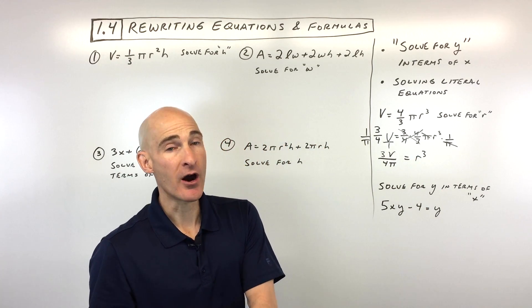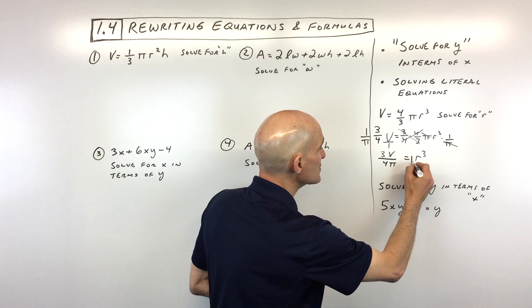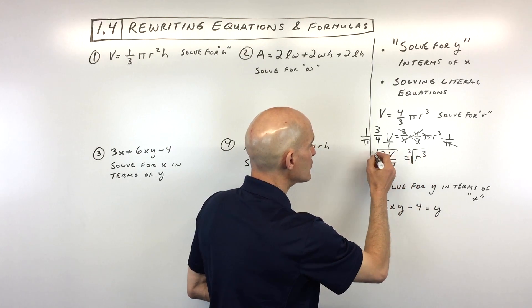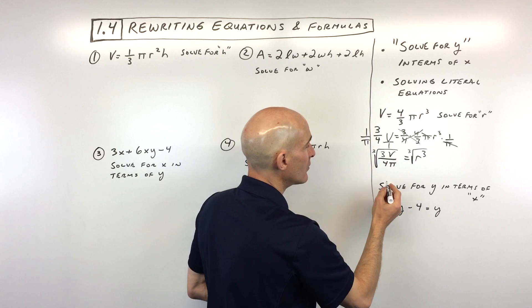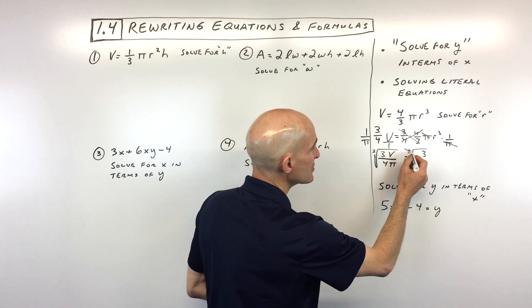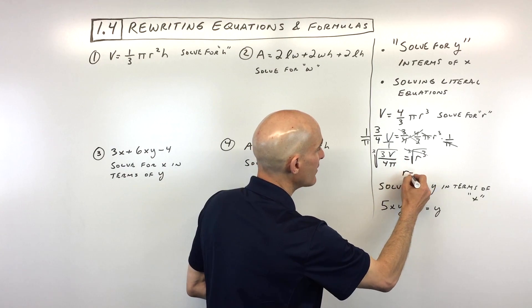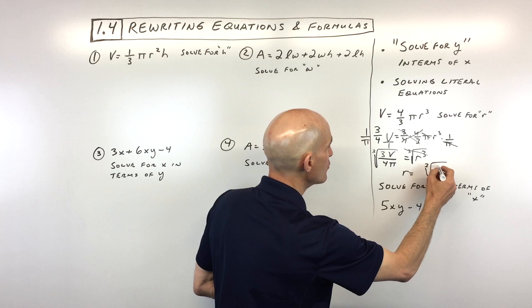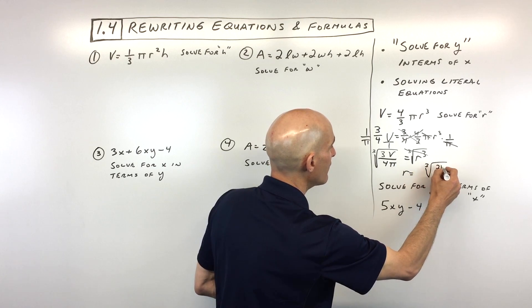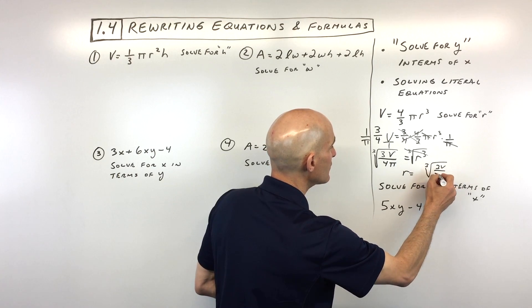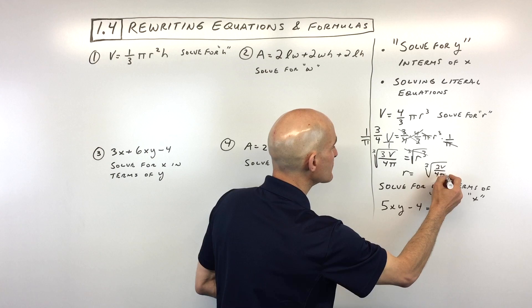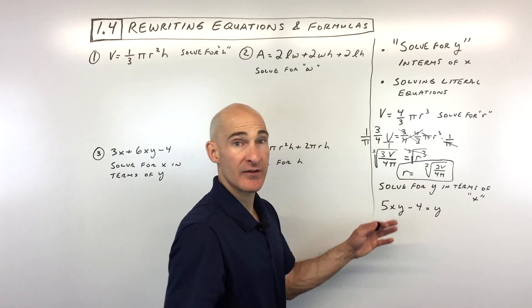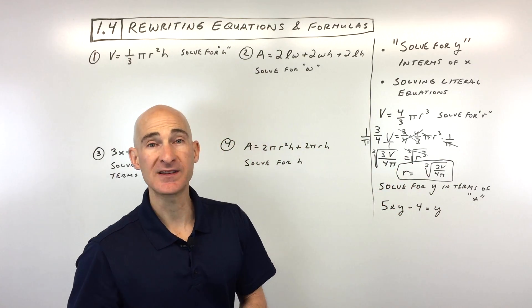We want just r, not r cubed, so we take the cube root of both sides — the inverse operation. The final answer is r equals the cube root of 3V over 4π. The variable is now by itself, which is exactly what we wanted.